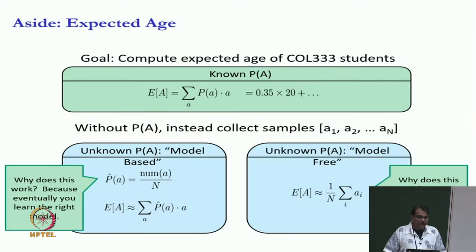And now we will even think about how many parameters are we estimating. Let us think about how many parameters are we estimating. In the unknown model case, how many parameters are we estimating? Let us say your ages can be anywhere from 18 to 60. How many parameters are we estimating? We are estimating 43 parameters in the first version. In the second case, how many parameters are we estimating?